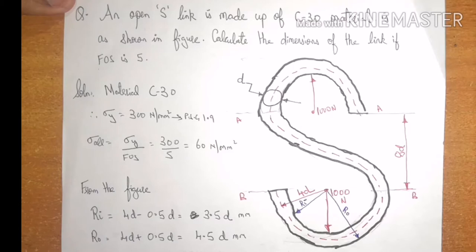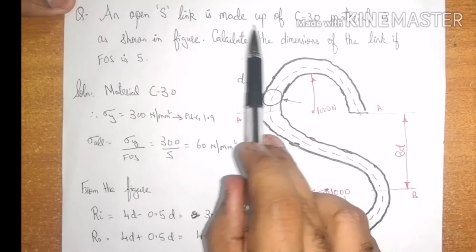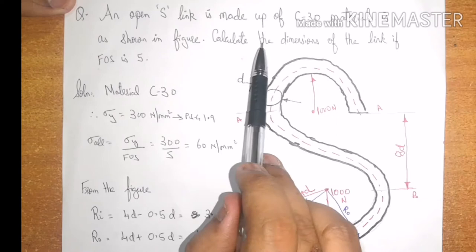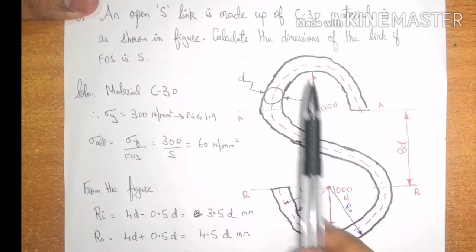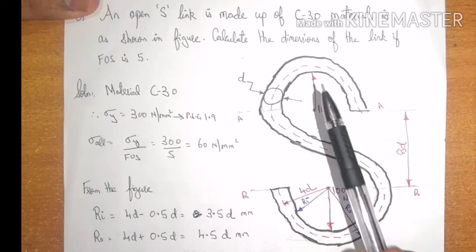The question says an open S link is made up of C30 material as shown in the figure. Calculate the dimensions of the link if factor of safety is 5 and this is the S type of link given. The load applied is 1000 newtons.